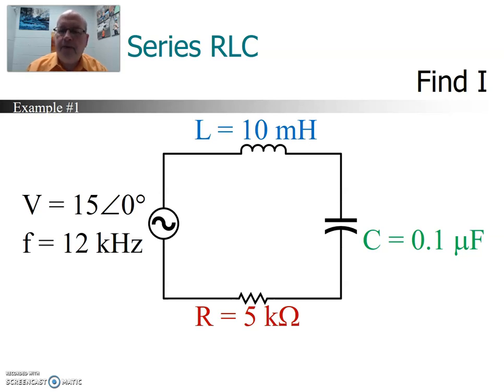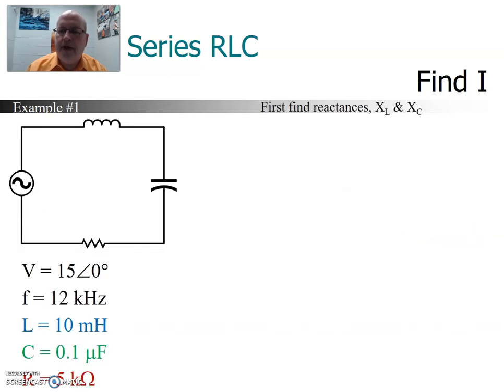So the first step we're going to do is to convert the inductance and capacitance into reactance values. So in order to find x of l, the reactance of the inductor, we use the formula x of l is equal to 2 pi f l. And then we're going to plug our numbers in. The frequency is given as 12 kHz. Inductance is 10 millihenries. So when we do the multiplication, we're going to get a value of x of l of 754. And the units for that are ohms.